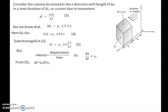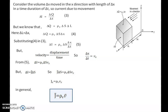We know that delta I equals current density into surface area, so J into delta S equals rho V into delta S into Vx. Delta S cancels, giving the current density component in the direction of X: Jx equals rho V into Vx. In general, J equals rho V into velocity. This is the relation between current density and volume charge density — current density equals volume charge density multiplied by the velocity of charge movement.